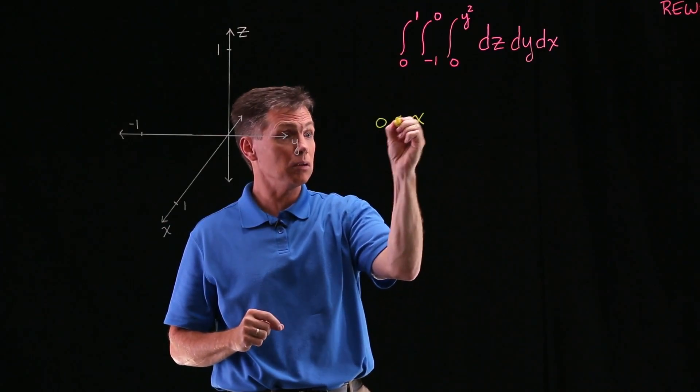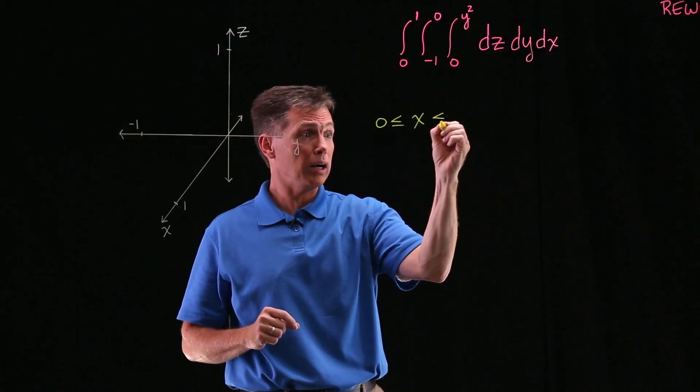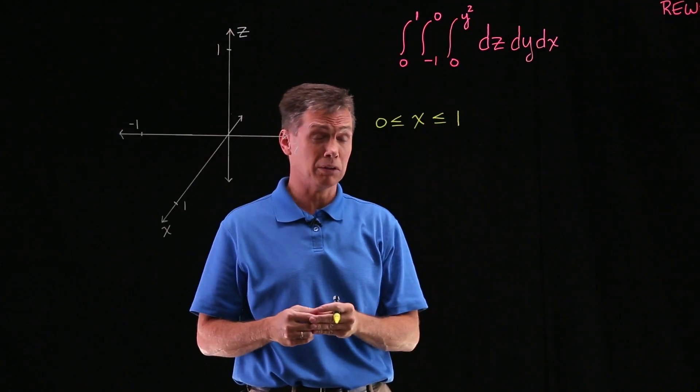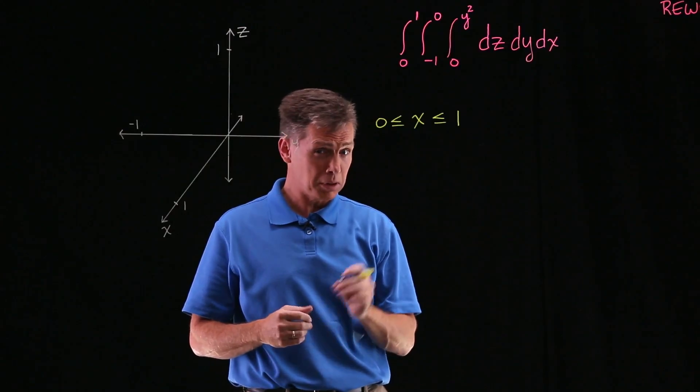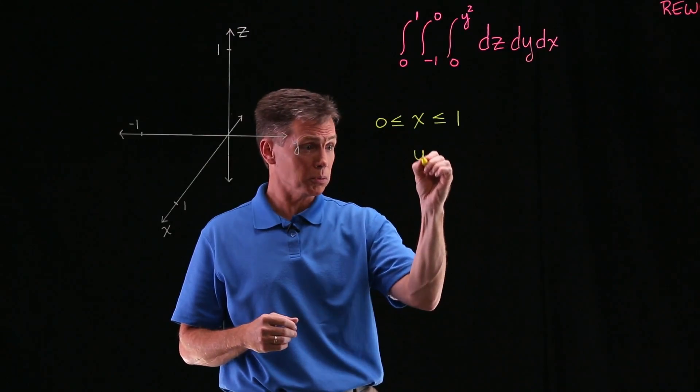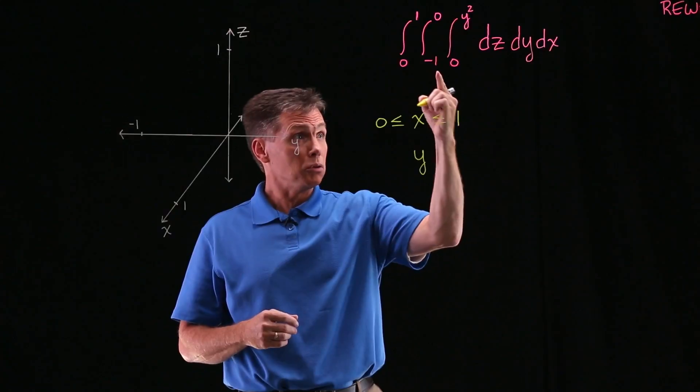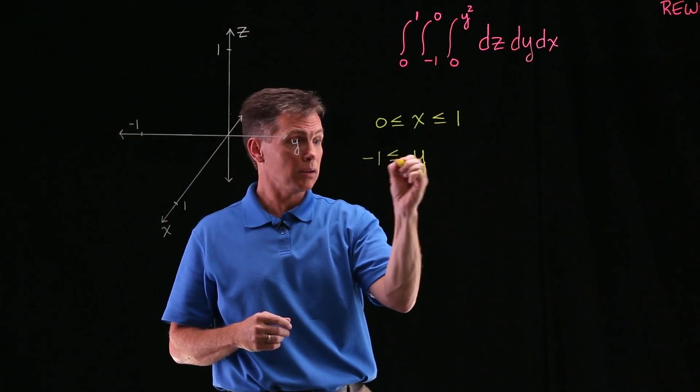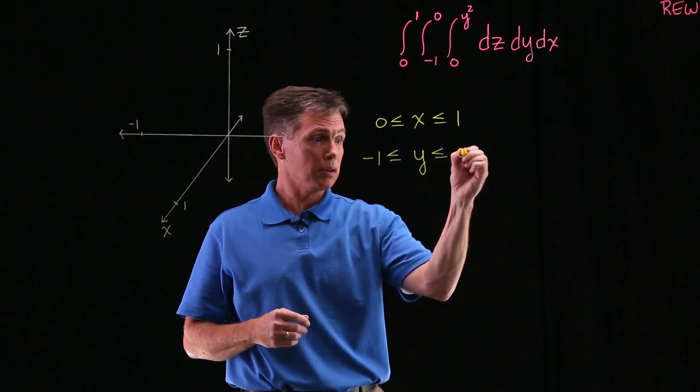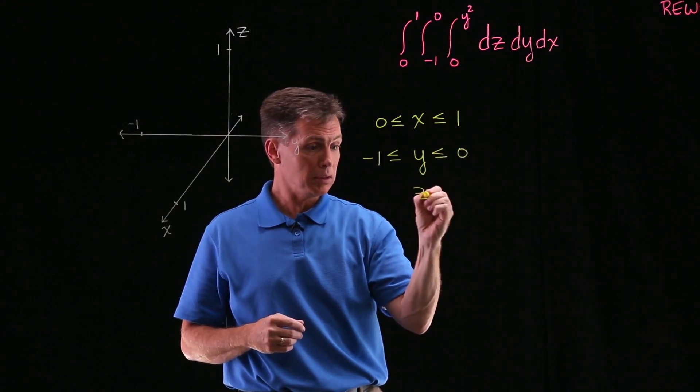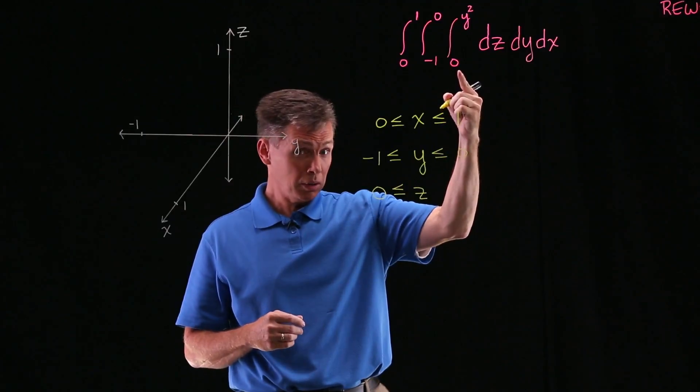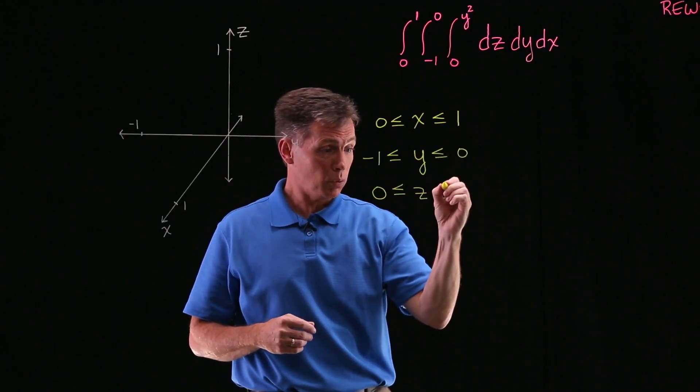Let's do the same thing for each of the other variables. y goes no lower than negative 1 and no higher than 0. And finally, z goes no lower than 0 and no higher than y squared.